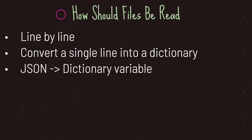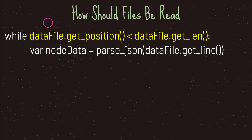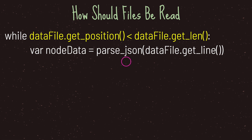Files should be read line by line. Saving and reading line by line is common in many programming languages. In Godot we will be reading line by line and converting every single line into a dictionary value stored in a variable. We take the JSON object and convert it to a dictionary variable. We use get_position() to track where we are in the file, loop while we are less than the file length using get_line(), and use parse_json() to convert the JSON format into a dictionary value we can pass into a variable.